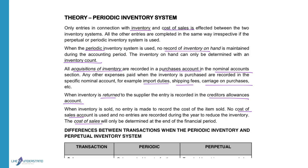In summary, the differences between periodic and perpetual: in the periodic system, they don't use an inventory account, they don't use a cost of sales account, and they don't record inventory on hand — so they must do an inventory count. All acquisitions are recorded in the purchases account, with other expenses in nominal accounts. Returns are recorded in the creditors' allowances account, and cost of sales is only calculated at year-end.